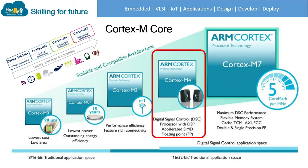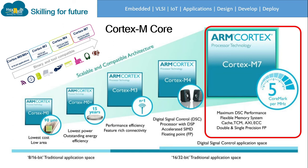Cortex-M4 combines features of M0, M0+, and M3 with additional features like digital signal control processor with DSP-accelerated SIMD and floating point units. Cortex-M4 is a general target for low-cost as well as medium-performance industrial applications. Cortex-M7 is the core with maximum performance using DSP, a flexible memory system with cache, and double-precision floating point. As we progress through Cortex-M cores, features are added and the speed and performance of the controller increases.